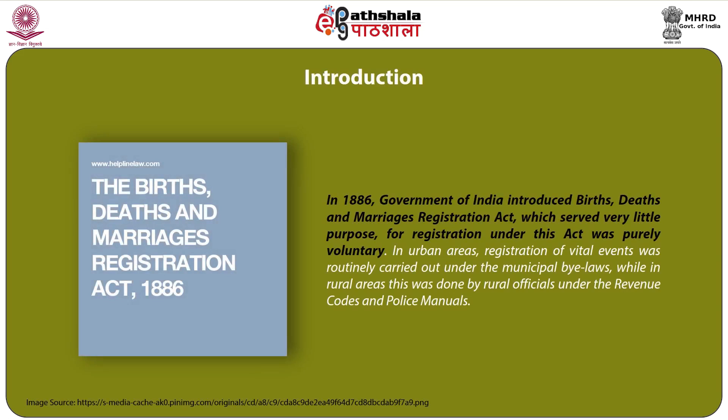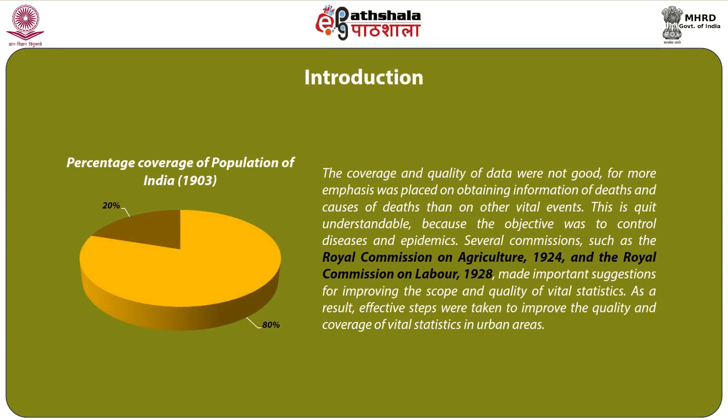The 1886 Government of India Births, Deaths and Marriages Registration Act served very little purpose as registration under this act was purely voluntary. In urban areas, registration of vital events was routinely carried out under municipal bylaws, while in rural areas this was done by rural officials under the revenue codes and police manuals. By 1903, about 80 percent of the census population of India was covered by the registration system. However, the coverage and quality of data were not good, as more emphasis was placed on obtaining information on deaths and causes of deaths than on other vital events, since the objective was to control diseases and epidemics.